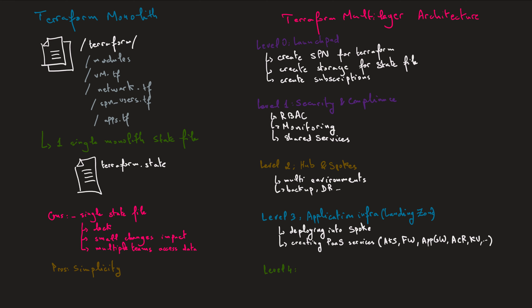Now that we have all the infrastructure required to run the application, we go to level four and run the application itself. Here we deploy front-end applications, back-end applications, and containers — deploying all the microservices if containerized. This could be done by other tools than Terraform, maybe using scripts, but we can also do it with Terraform by leveraging Terraform providers — for example, the Terraform provider for Kubernetes or using Helm charts. So I can continue using Terraform to deploy not only infrastructure but also the application itself, managing the entire stack with Terraform.